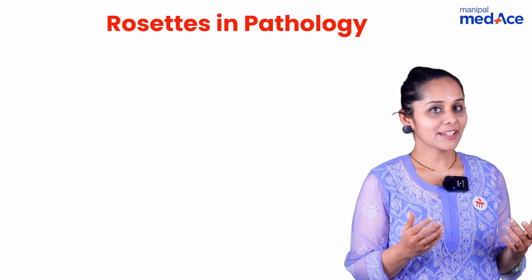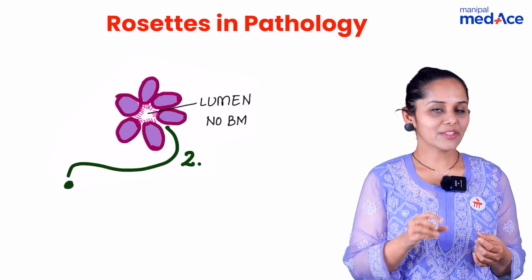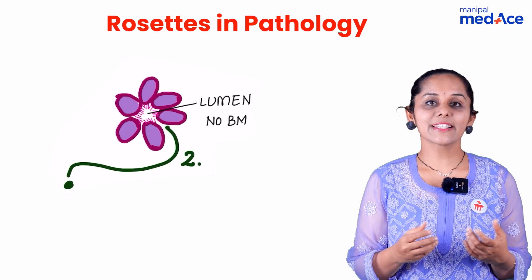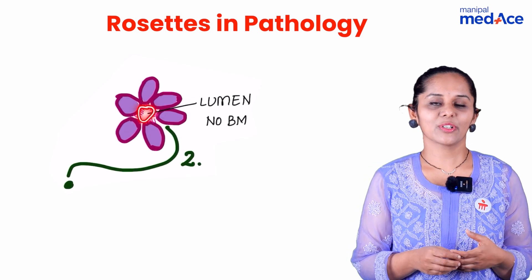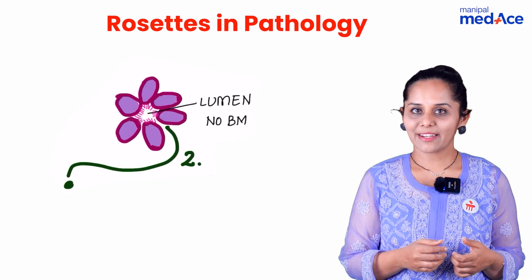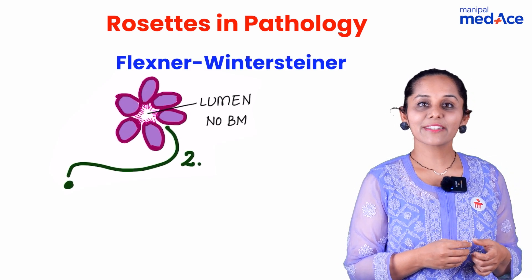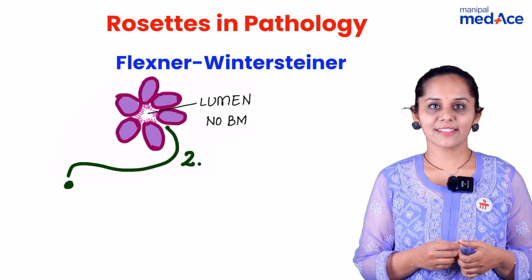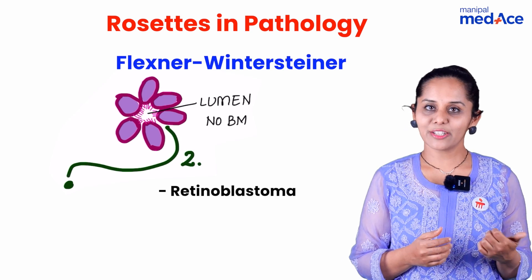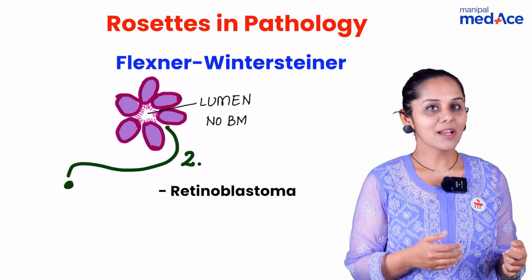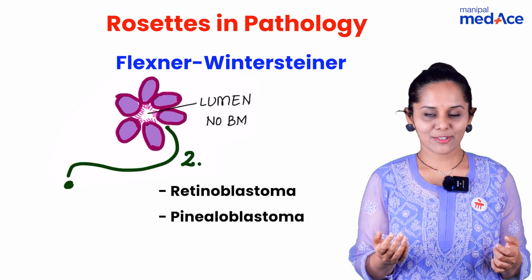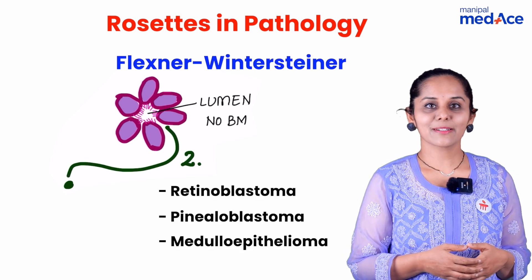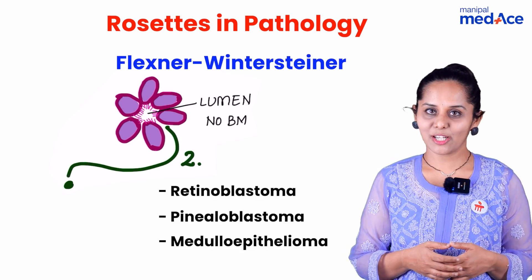The second type of rosette is one wherein the central area is empty. That is characteristic of the Flexner-Wintersteiner rosette, which is seen in cases of retinoblastoma, pinealoblastoma, as well as medulloepitheloma.